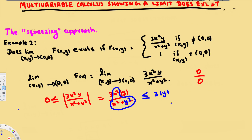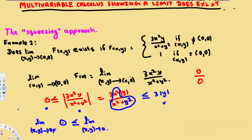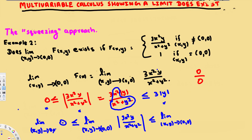Using this information we can create the squeezing inequality. We take the limit of all three parts and squeeze it to see what the middle value is going to be. So: limit as (x,y)→(0,0) of 0, then the limit of |3x²y/(x²+y²)|, and then the limit as (x,y)→(0,0) of 3|y|.